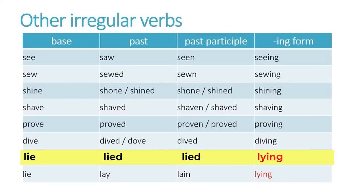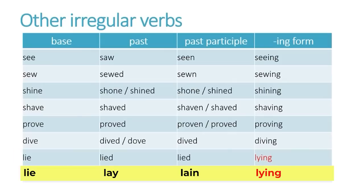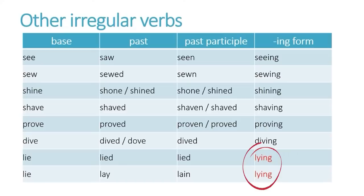'Lie' is one verb that can be very confusing for a lot of people because it has two different meanings. The first one is when you tell an untruth — say something that is false — and that is a regular verb, taking on the D or ED ending: lie, lied, lied. However, the second meaning — to sleep, recline, or rest on your back — is different: in the past tense it is 'lay,' and in the past participle it is 'lain.' For both forms of lie, the -ing form has the same spelling: L-Y-I-N-G.